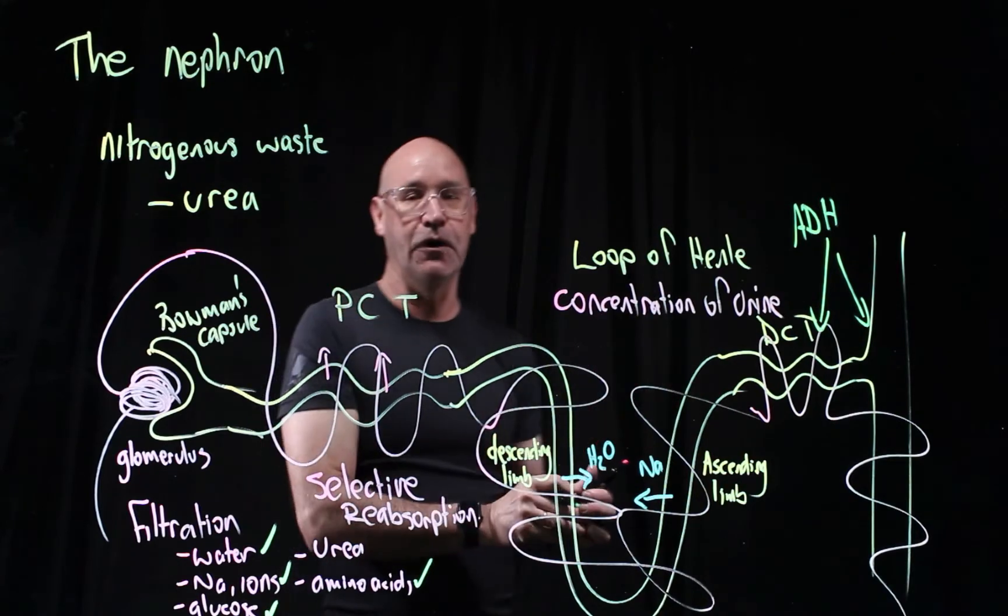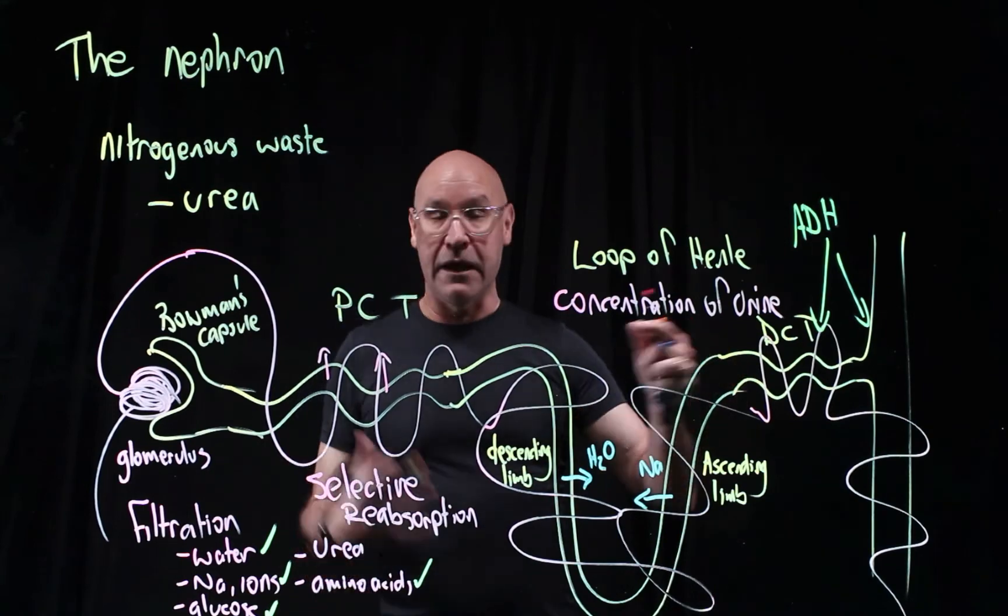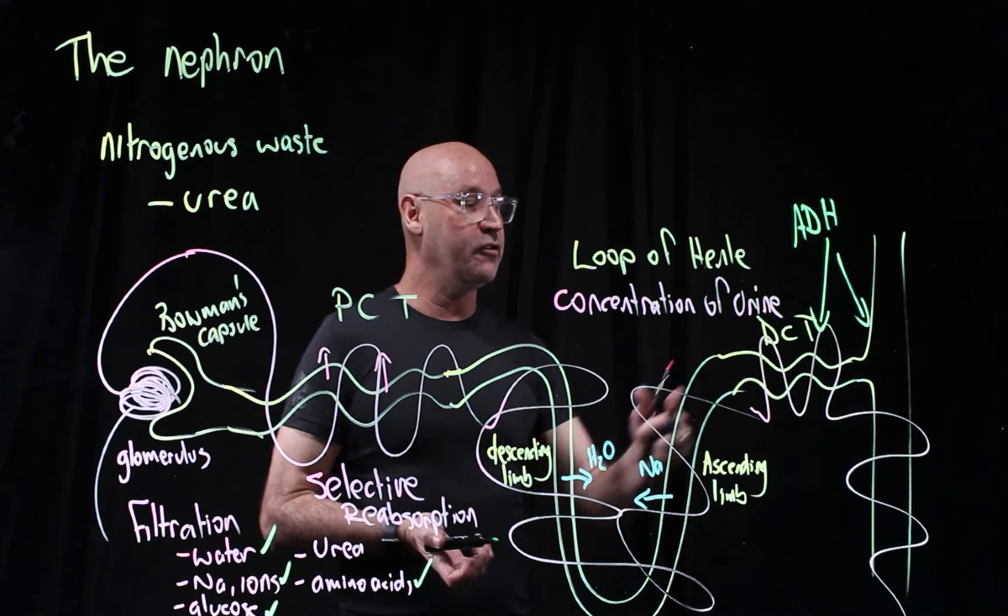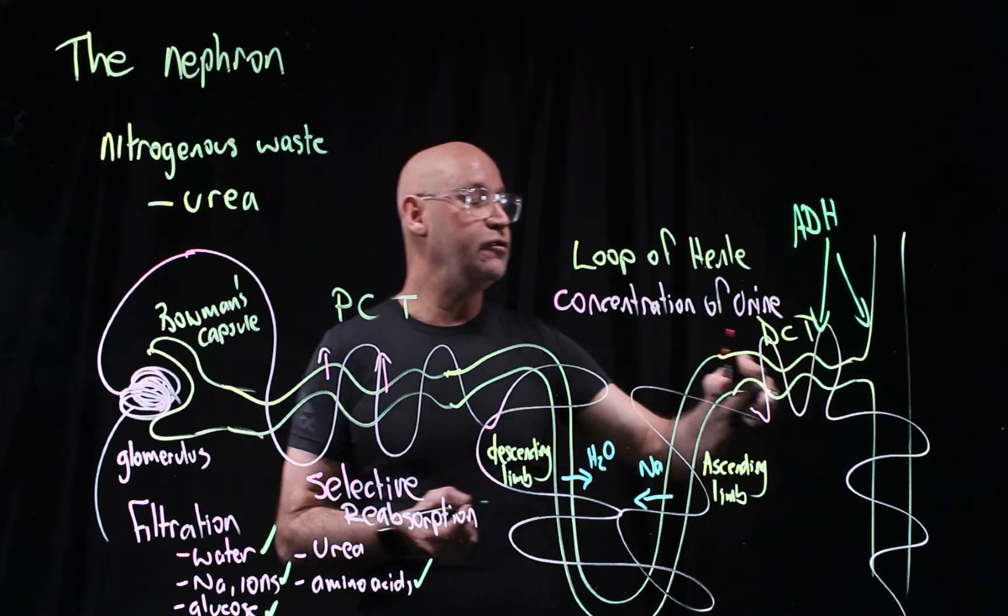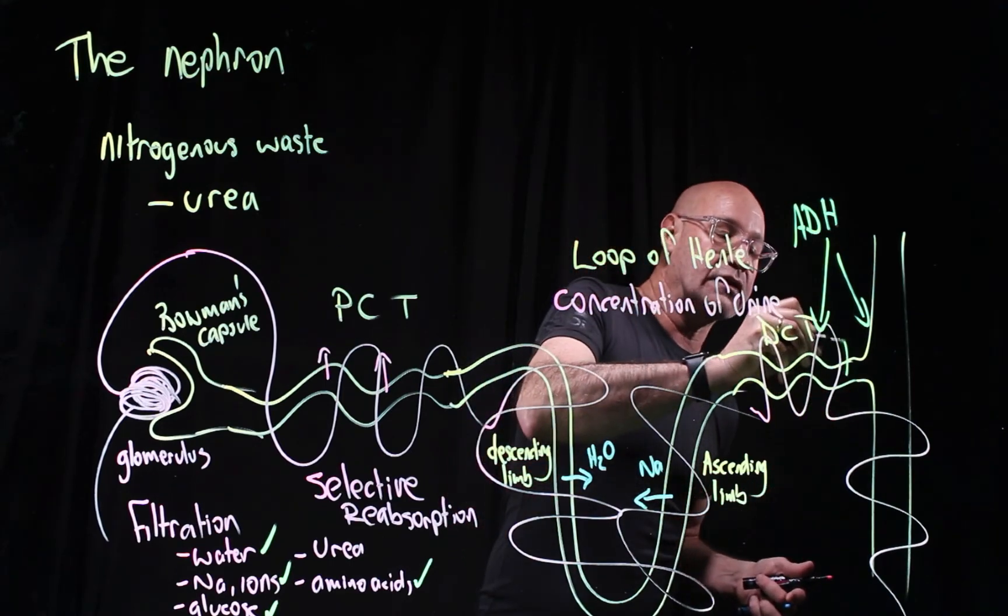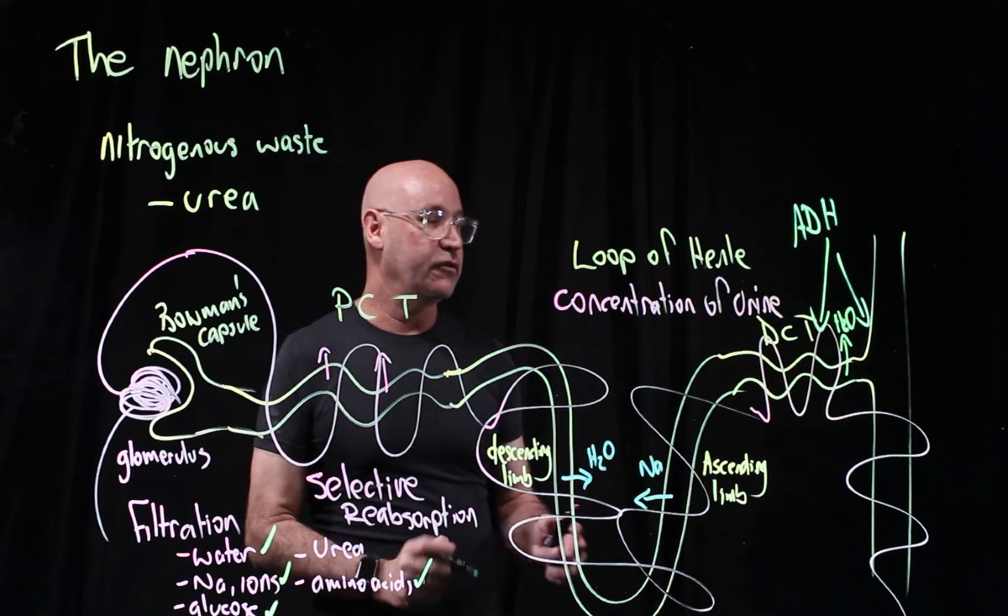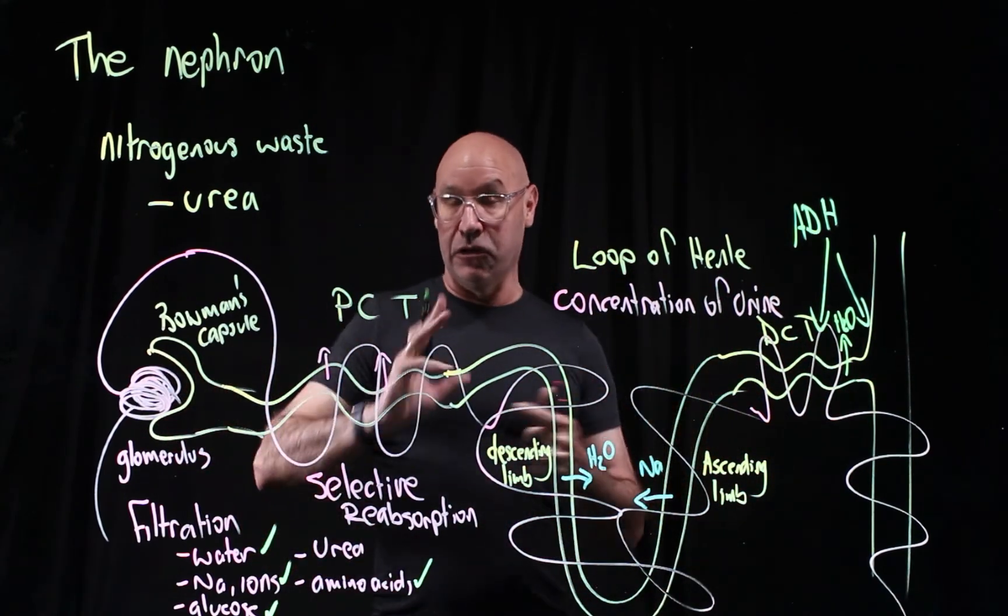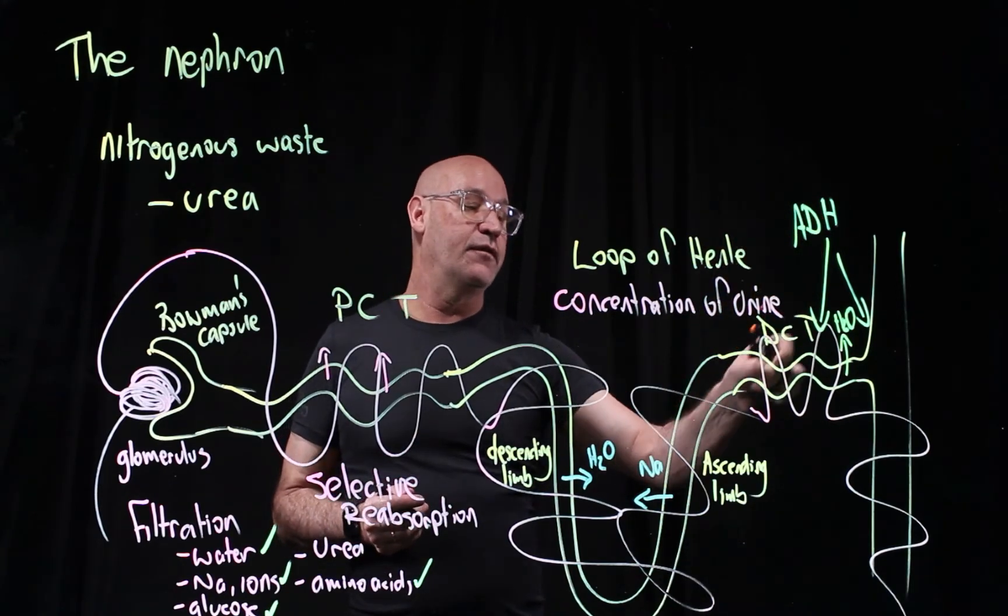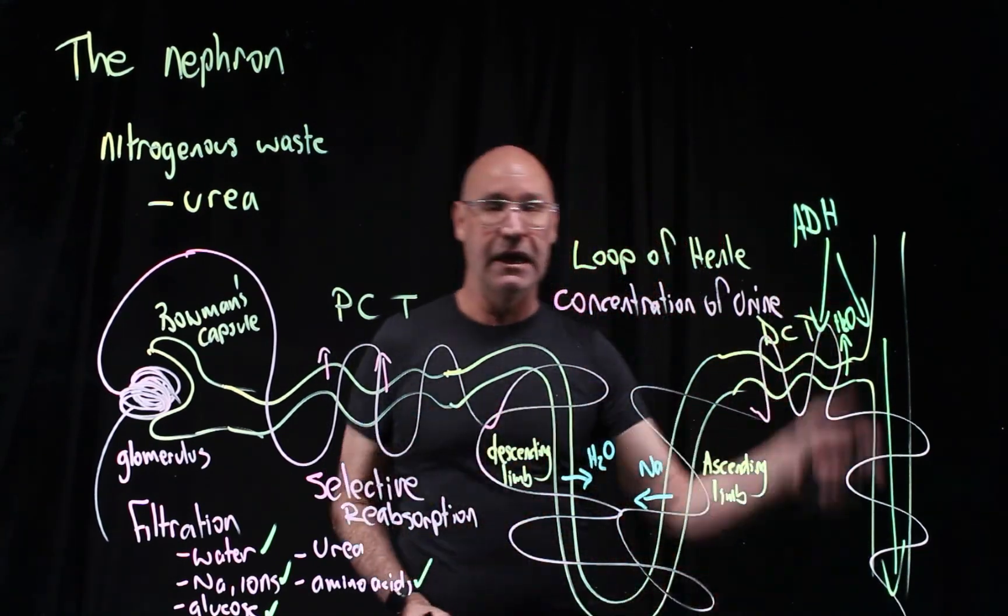ADH regulates the amount of water in urine. When someone is dehydrated, ADH makes the distal convoluted tube and collecting duct more permeable to water, so more water gets reabsorbed into blood vessels. When there's plenty of water in the blood, ADH levels decrease and the tube becomes less leaky, so more water exits into the bladder.